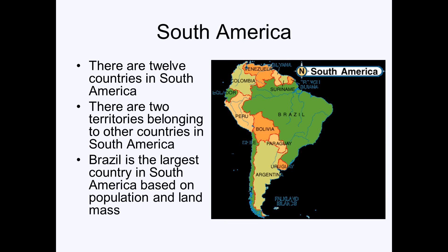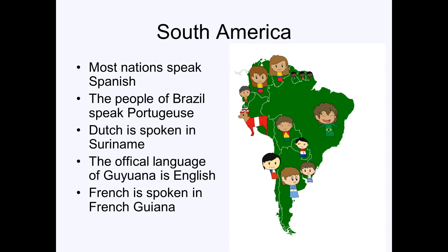There are twelve countries in South America and two territories belonging to other countries. Brazil is the largest country in South America both in land area and population. Most nations speak Spanish; Brazil speaks Portuguese, Suriname speaks Dutch, Guyana's official language is English, and French is spoken in French Guiana.